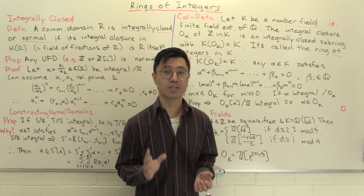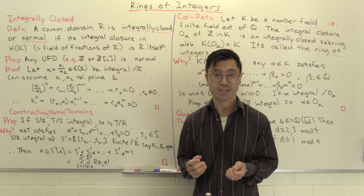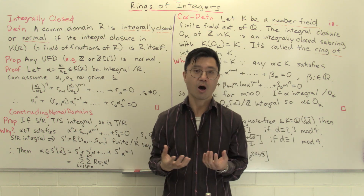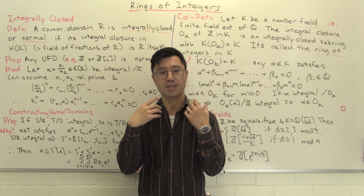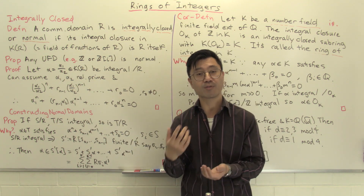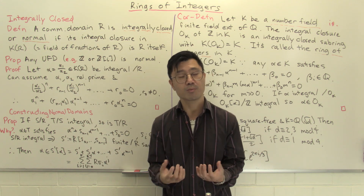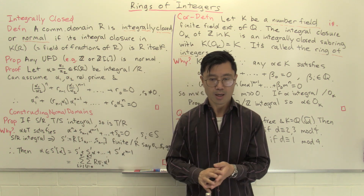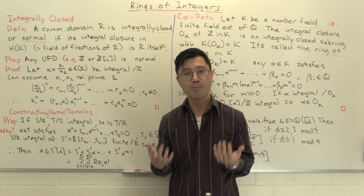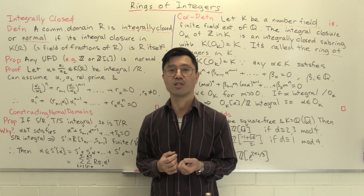Hi, I'm Daniel Chan from UNSW Sydney. Welcome to another adventure in pure mathematics. We saw that when Gauss studied the question of sums of two squares, he introduced the Gaussian integers. One of the reasons why it's so useful is because the ring of Gaussian integers is a unique factorization domain. So it has nice arithmetic. So the question here is: can we find other arithmetically interesting examples of rings of integers?